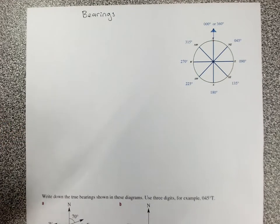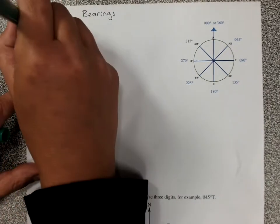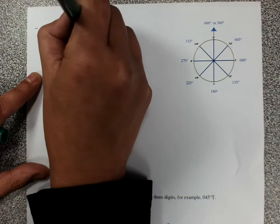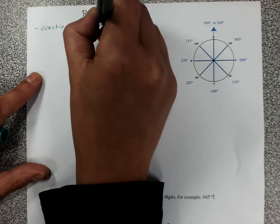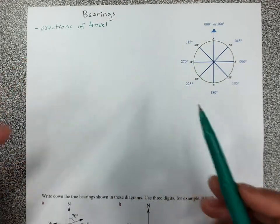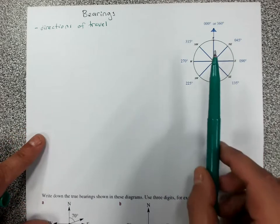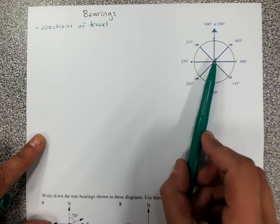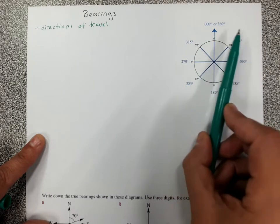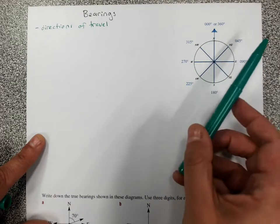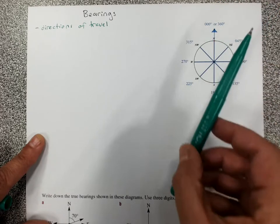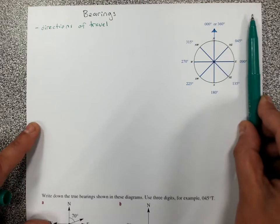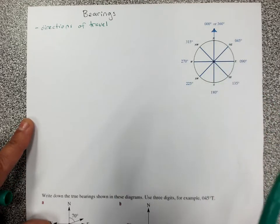True bearings. Bearings are directions of travel. So in the same way as you'd say turn right or turn left, a bearing is if we're facing north and we need to go this way. That's a 45 degree turn from facing north and we want to travel that way. So it gives a direction related to north of where we want to travel.